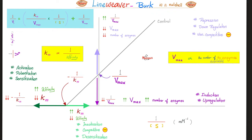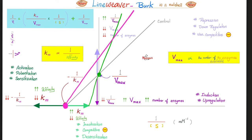On the Lineweaver-Burk, competitive inhibitors decrease affinity so Km goes up — shifting the line to the right — but Vmax does not change, so I draw a line that intersects the y-axis at the same point as the control. That line is my competitive inhibitor. Notice that the competitive inhibitor line and the control line intersect on the y-axis.